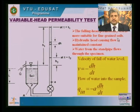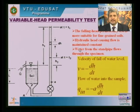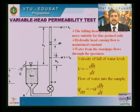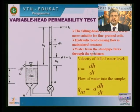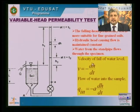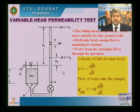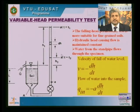The falling head permeability test is more suitable for fine-grained soils. The hydraulic head causing the flow is not maintained constant, unlike in the constant head permeability test. Water from the standpipe flows through the specimen and we do not measure the quantity of water flowing; we measure the head at different time intervals. Now, before looking into the further procedure for getting K, let me derive the equation for K using the variable head test.